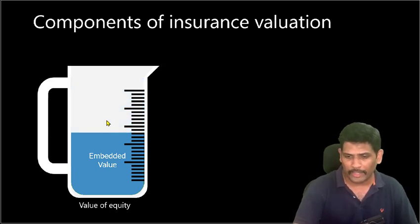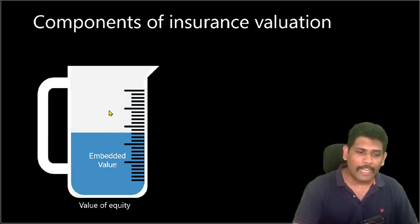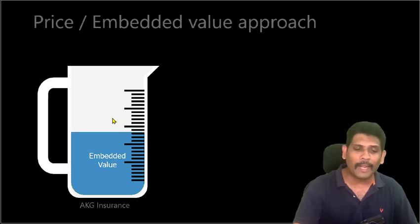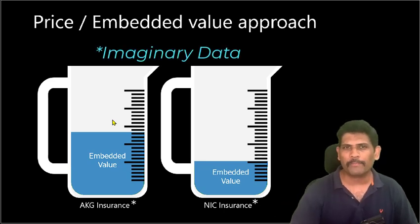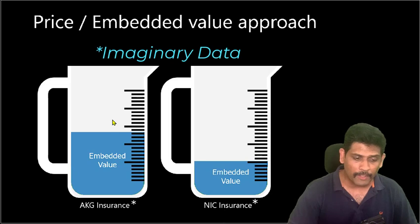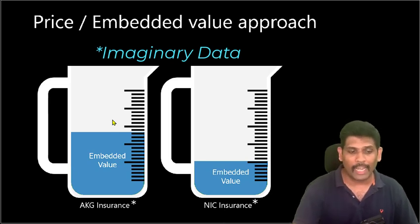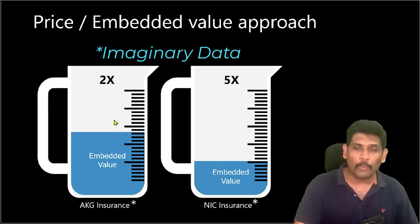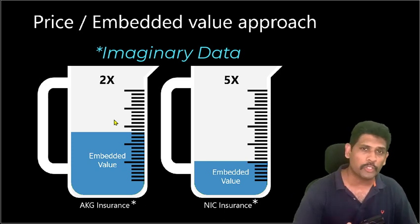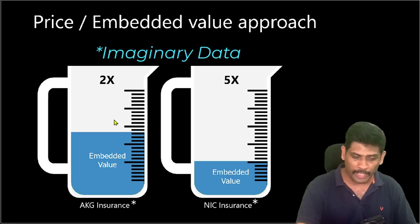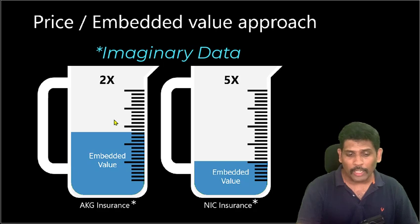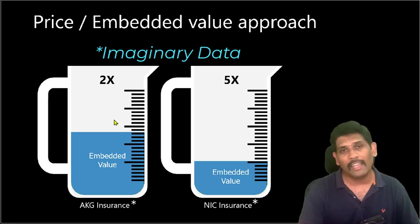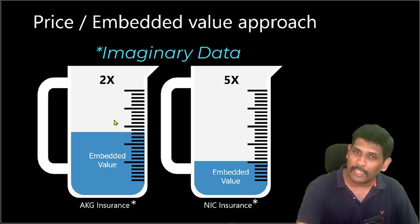So what do analysts do? We don't calculate this directly. Analysts therefore come up with a relative valuation metric called price to embedded value. Here we divide price by embedded value. The idea is simple — the more the jar is filled up with embedded value, the better it is. If the price to embedded value ratio is lower, then it is cheaper. For example, if AKG Insurance has a ratio of 2x and NIC Insurance has a ratio of 5x, we conclude that AKG is cheaper compared to NIC.